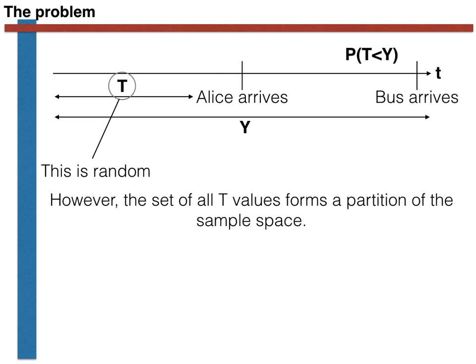We are saved, however, by remembering the partition theorem, which we learned about in an earlier video. We can use the partition theorem and note that the set of all possible capital T values forms a partition of the sample space. We can thus calculate the probability that capital T is less than capital Y by calculating the sum, in inverted commas, of the probability that capital T is equal to a particular value small t, and that capital Y is greater than small t.